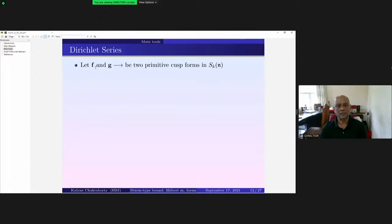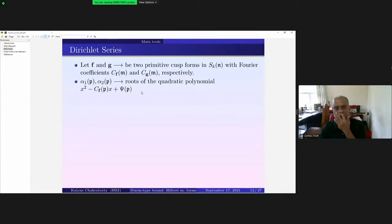So let us choose two primitive cusp forms, ideally primitive cusp forms f and g. They are normalized with Fourier coefficient cf(m) and cg(m) respectively. Now alpha_1p and alpha_2p, we know, are the roots of this quadratic polynomial cf(p), x, psi_p.